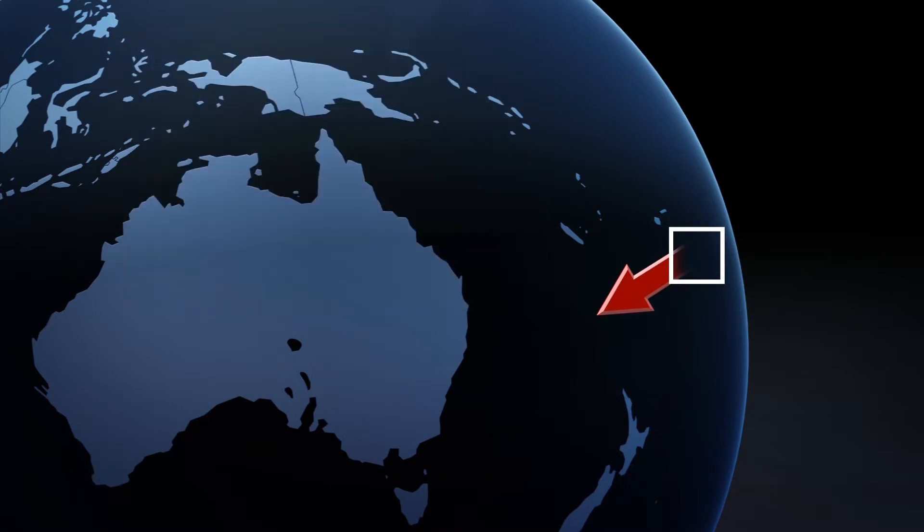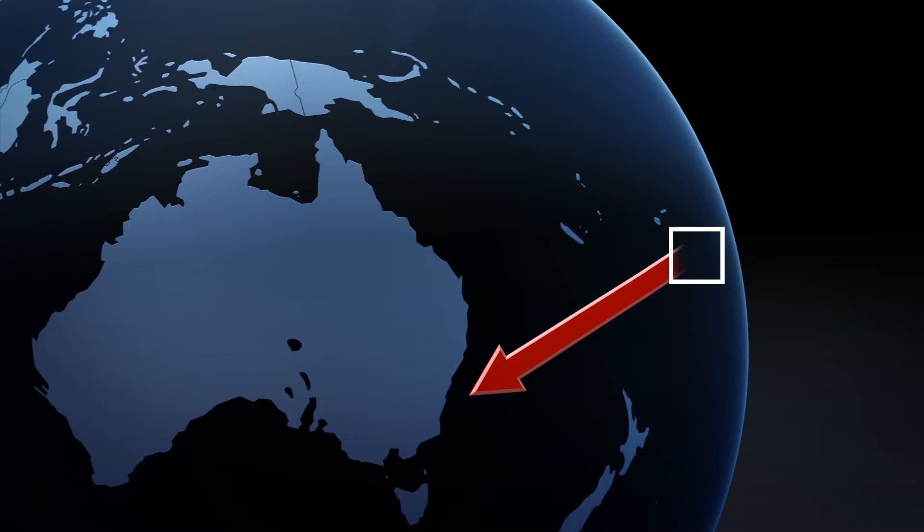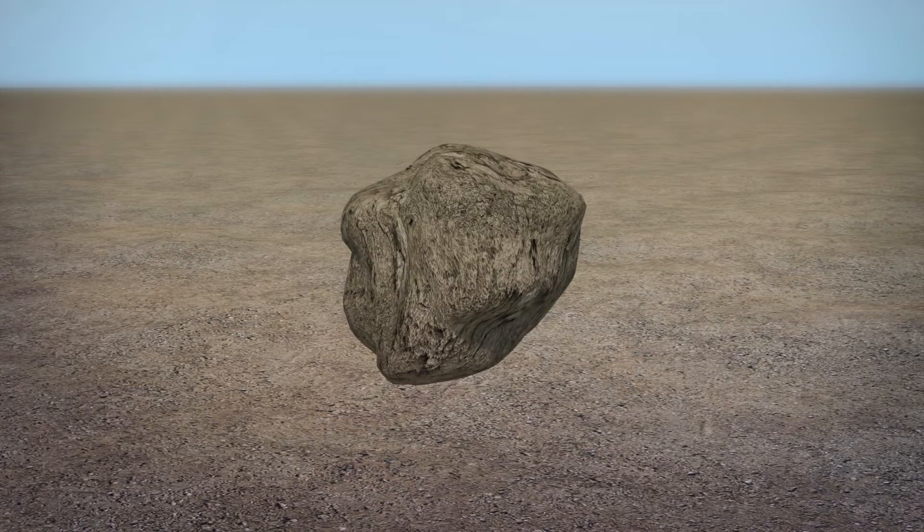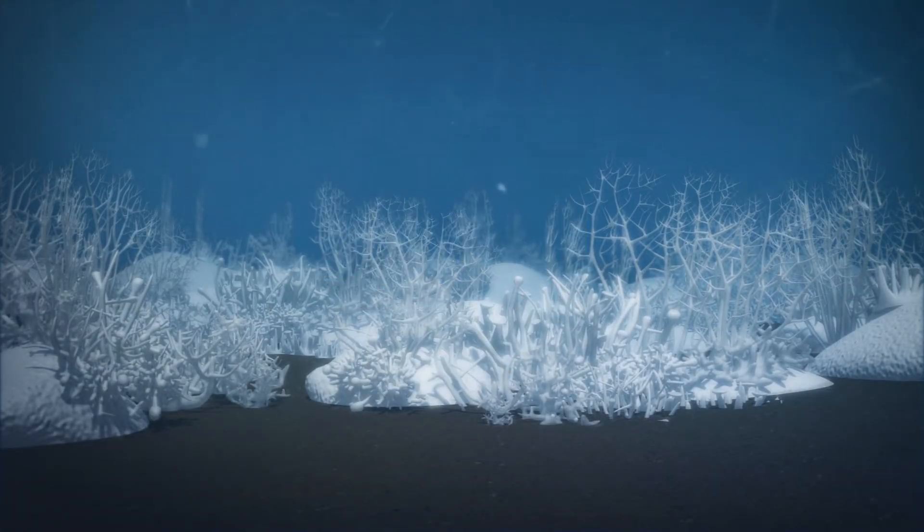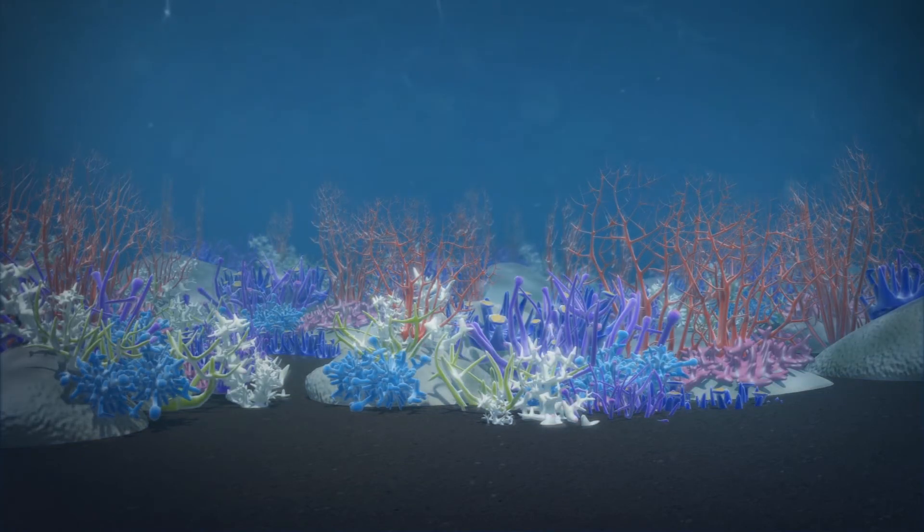It will likely pass New Caledonia and Vanuatu and possibly reach Australia in about a year. According to CNN, the pumice will bring with it microorganisms and other marine life as it drifts across the ocean. This could potentially bring in diverse colonies of corals or barnacles that could help restock the damaged Great Barrier Reef.